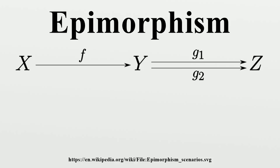Epimorphisms are used to define abstract quotient objects in general categories. Two epimorphisms f1: X→Y1 and f2: X→Y2 are said to be equivalent if there exists an isomorphism j: Y1→Y2 with j∘f1 = f2. This is an equivalence relation, and the equivalence classes are defined to be the quotient objects of X.